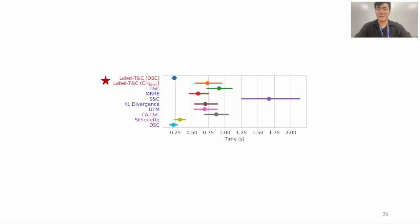Of course, label trustworthiness and continuity are also scalable. The scalability of our metrics highly depends on the scalability of the way we use to quantify the degree of clustering. Overall, it shows at least competitive scalability to the previous measures.